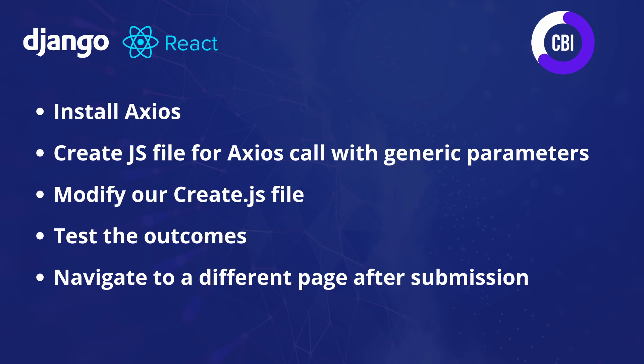To accomplish that we're going to be following five main steps in this video. We're going to start by installing Axios into our project because that's what's going to make the calls from our frontend to our backend and back. Next we're going to be creating a separate JS file for our generic Axios call with some parameters, so we can set up one file and reuse it in multiple places in our application.